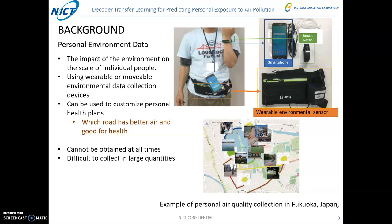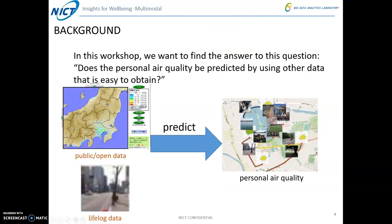As shown on this figure, we use wearable immersion sensors, smartphones, or a smartwatch with a camera to get those data. This data can be used to customize a personal health plan — for example, which route has better air quality and is good for health. But on the other hand, this data cannot be available at all times, and it is difficult to collect in large quantities.